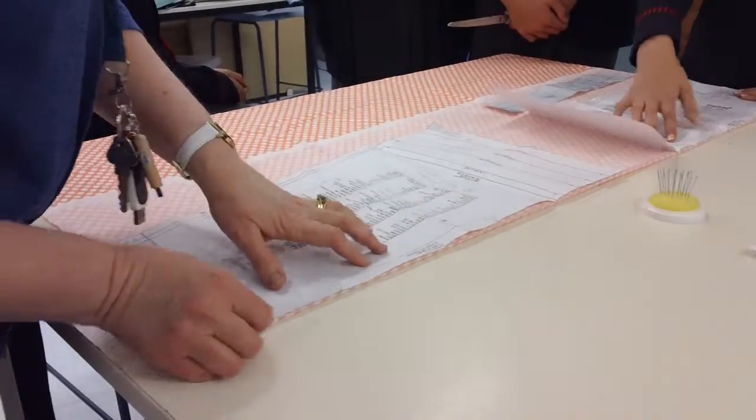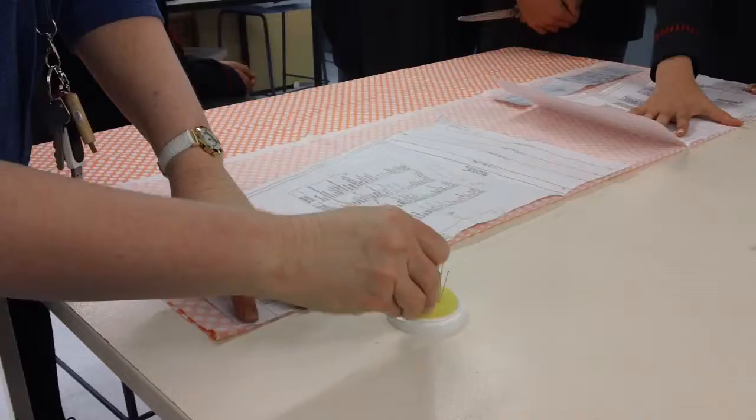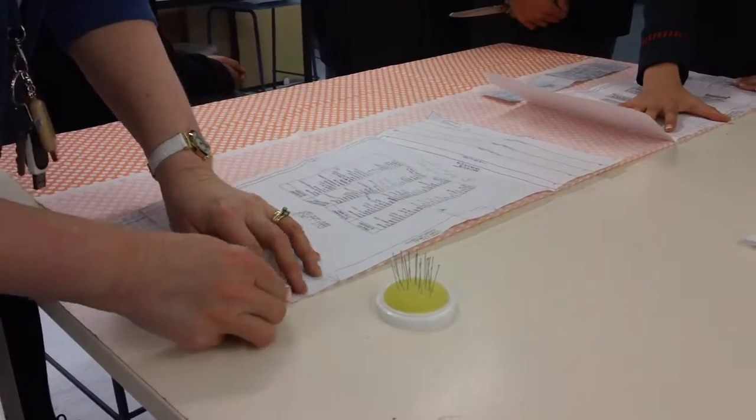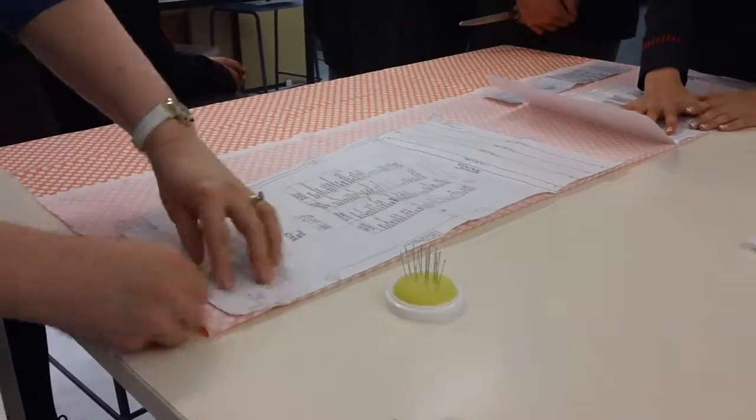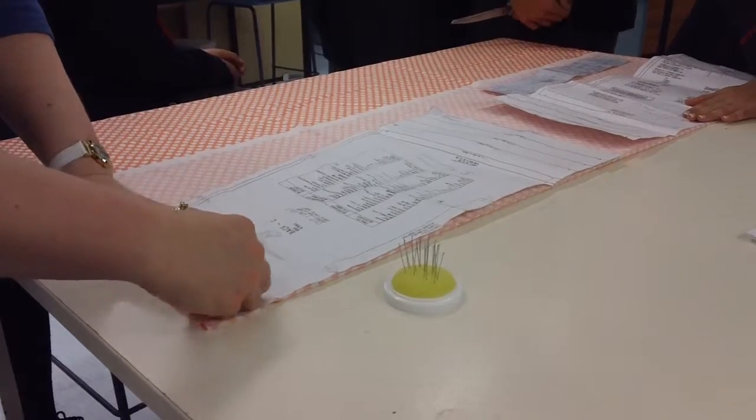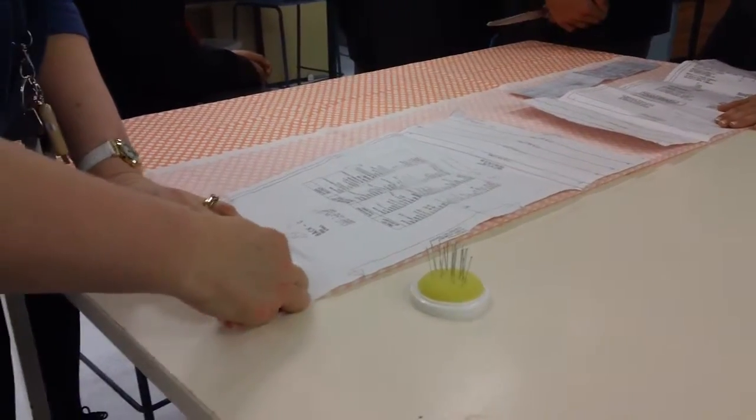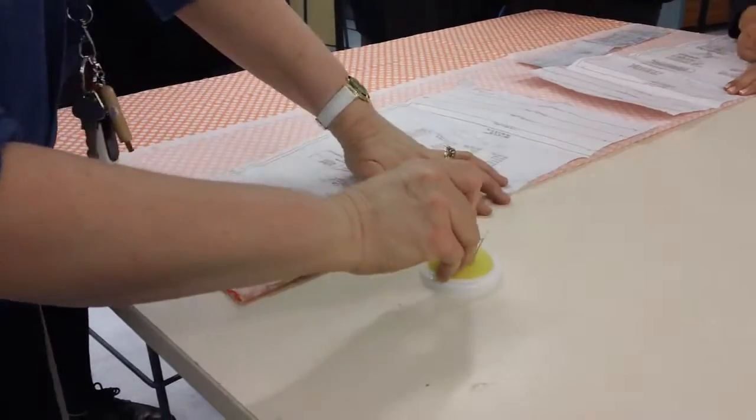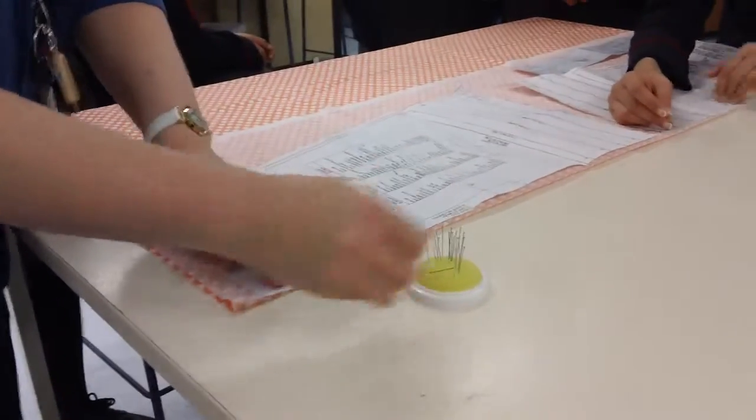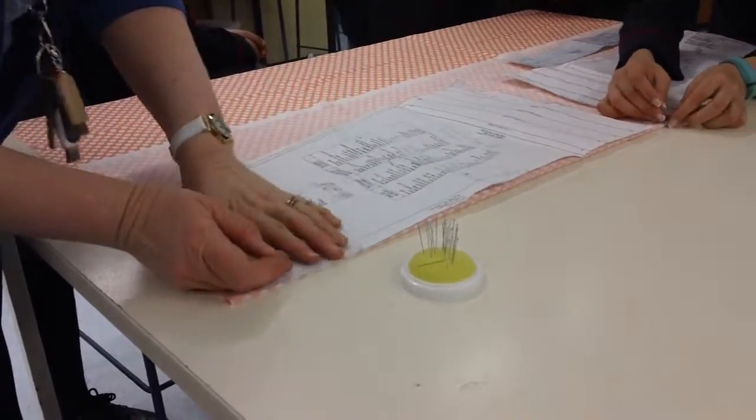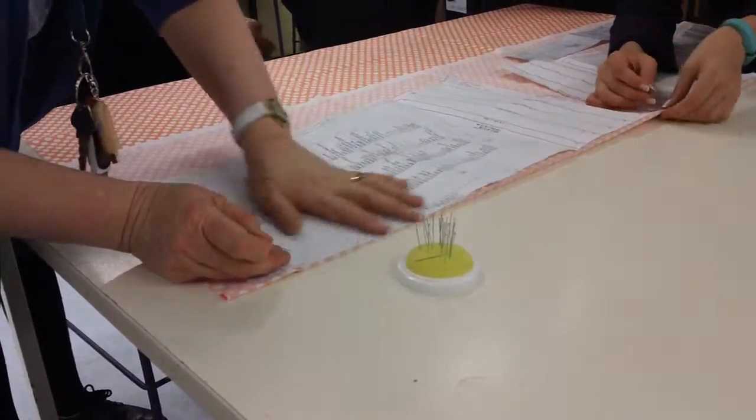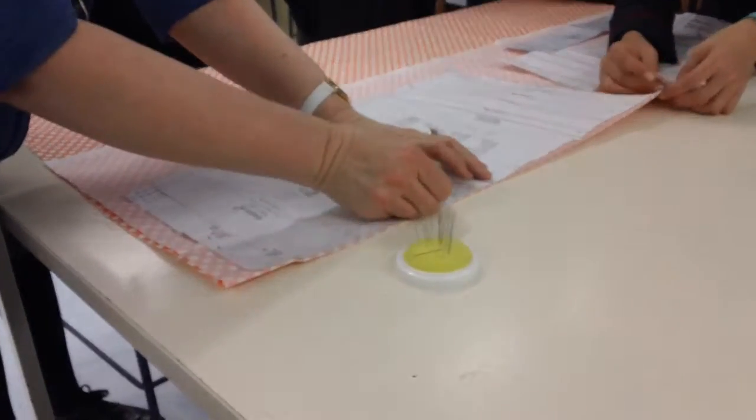Then you just pin it, and you need to pin so that your pins are within the pattern edge. You don't want them off the edge, you want them right in it, and maybe every 10 to 15 centimeters, put a pin in. Rather than pinning here, then pinning here, pin and smooth the pattern down and make sure you don't have any lumps as you go.